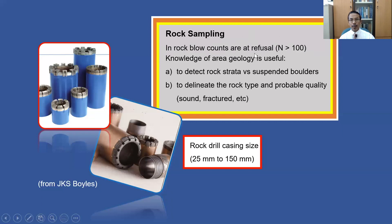Rock Sampling. By definition, a material is categorized as rock when the SPT number N is greater than 100. In practice, drillers normally stop driving the split spoon sampler when N reaches 50, as continuing would damage the drive shoe. It is useful to have knowledge of the geological condition of the proposed area, as this helps differentiate whether a refusal is a rock stratum or just a suspended boulder, and helps correlate the rock type with probable rock quality.